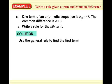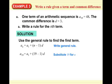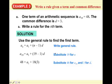We're going to write the rule for the nth term: A_N equals A1 plus (N minus 1) times D. Substituting 19 for N, the 19th term equals A1 plus 18 times D. We know the 19th term equals 48 and D equals 3, so we substitute those in. That's enough to figure out the first term: 18 times 3 subtracted from 48 gives us A1 equals negative 6.